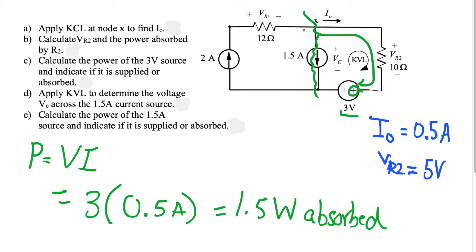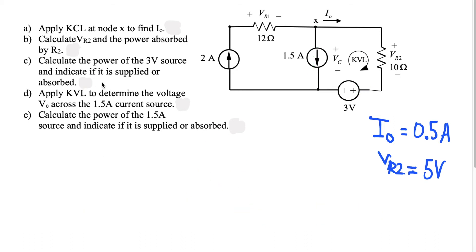So using P equals V times I, the voltage is 3 volts and the current is i_naught equal to 0.5 amps. That gives us 1.5 watts of power being absorbed by the 3 volt source. That's how we answer part c.